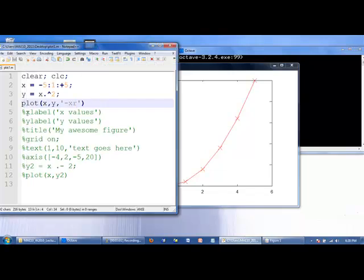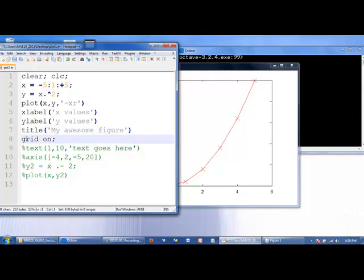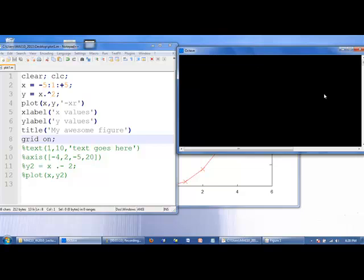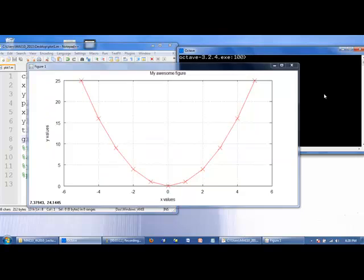We can add labels, a title, and turn on grid lines. You can see on this graph we have a title, the grid lines are all turned on, and we have labels for the y and x axis.